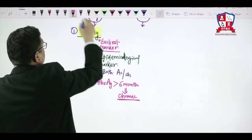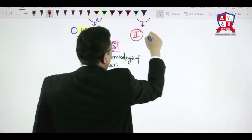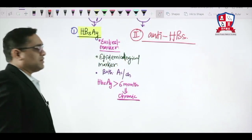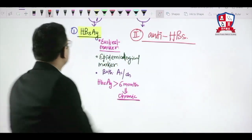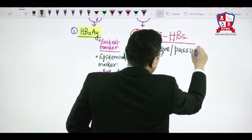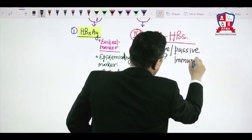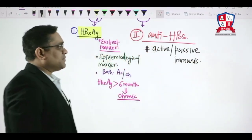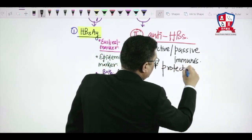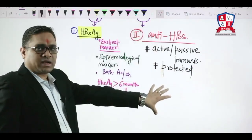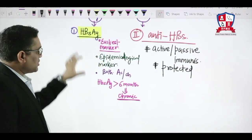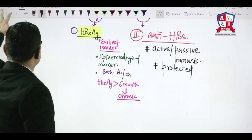When we look at antibodies, antibody against HBsAg — anti-HBs — will be suggestive of active or passive immunization. Anti-HBs present means the individual is protected. So anti-HBs indicates a protected individual or that active and passive immunization has been given to that person. To summarize: HBsAg is the earliest and epidemiological marker, and if present for more than 6 months it is considered chronic.